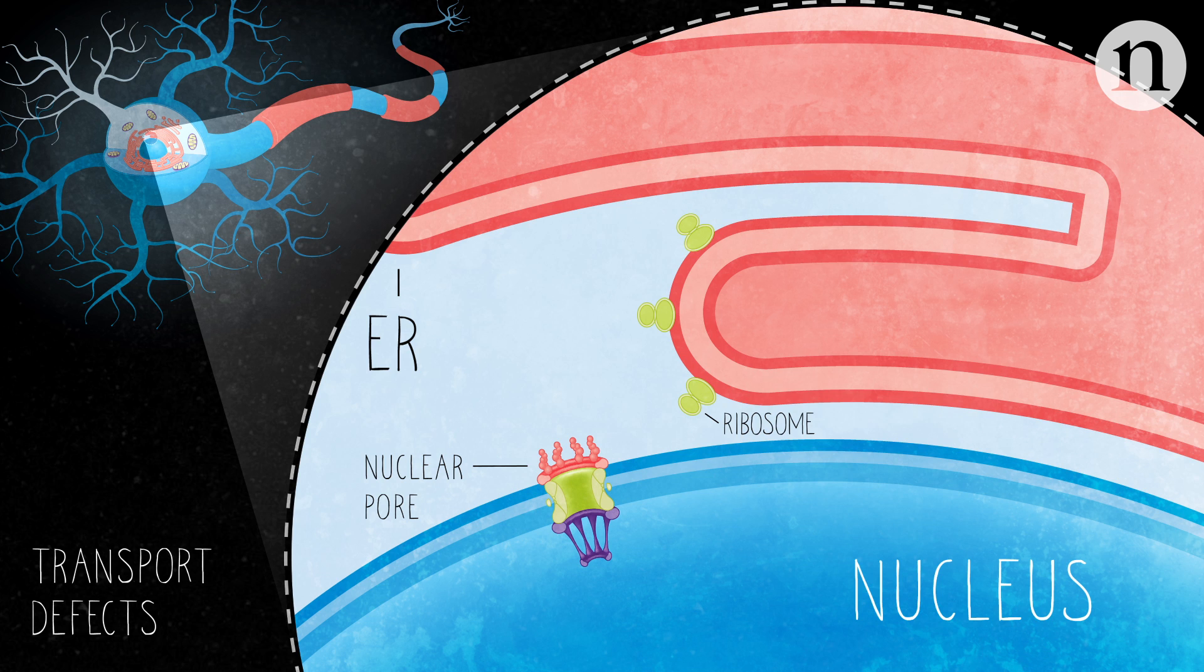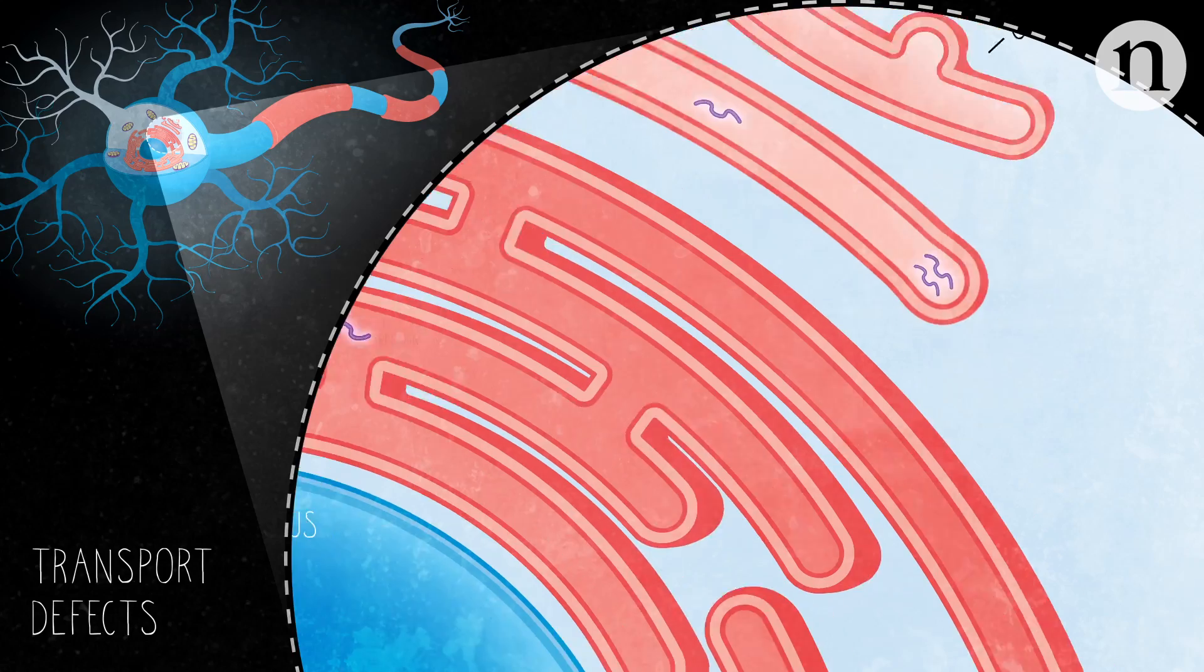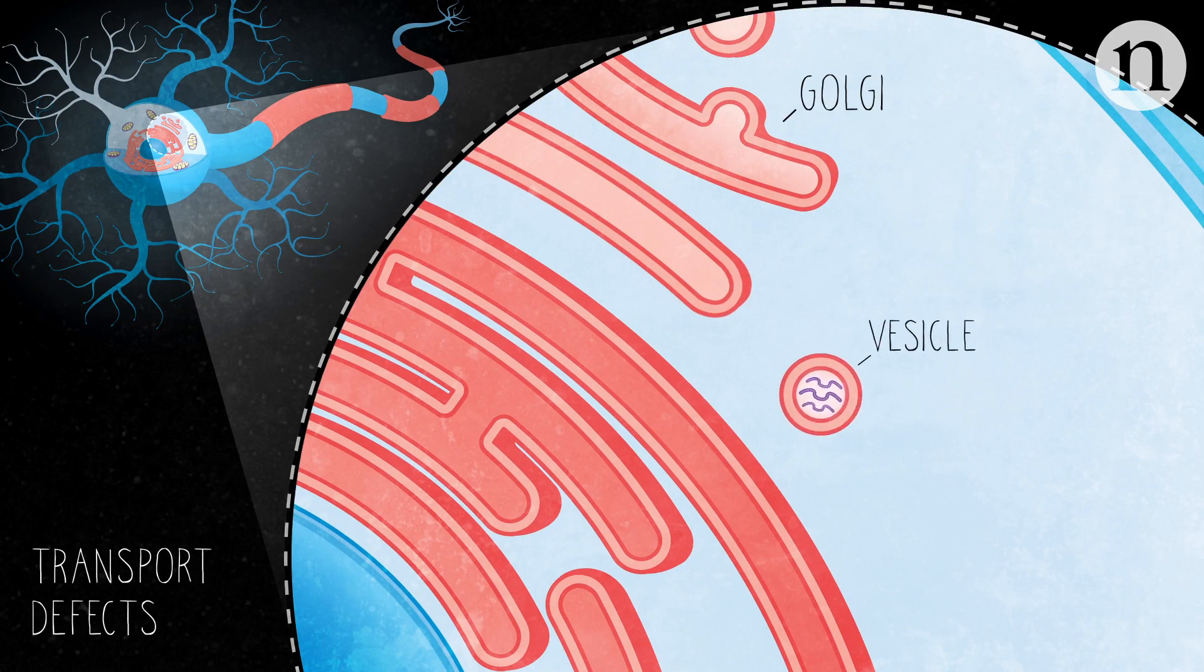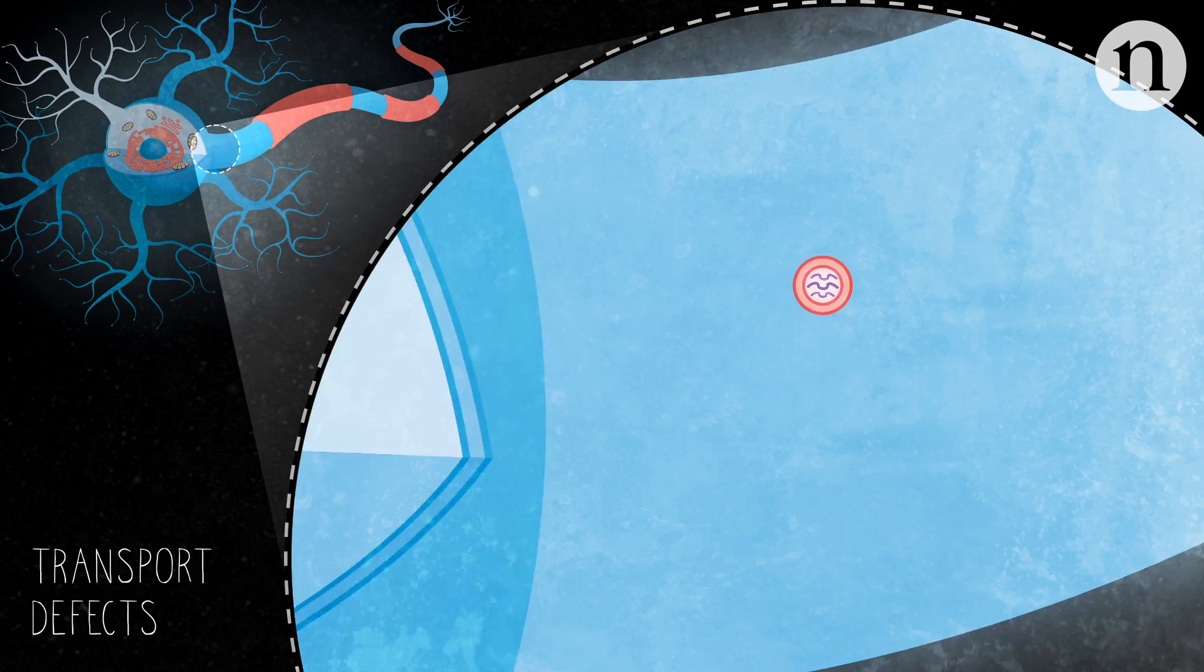For example, ALS-affected neurons often have problems transporting RNA, proteins, and vesicles, both in the cytoplasm and along the neuron's axon.